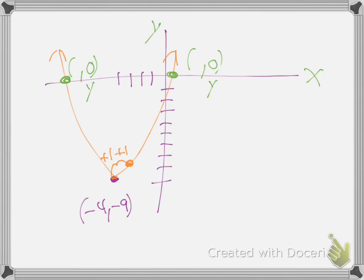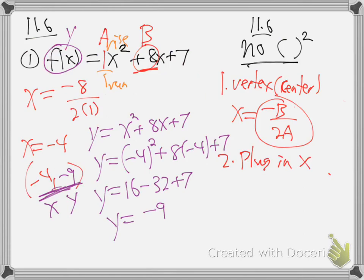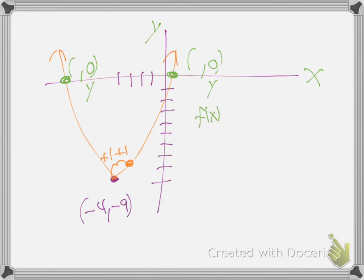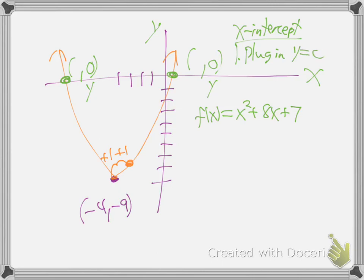So what could I do? I could plug in y equals zero to the equation. Because they have a y value of zero. So if I take the equation f of x equals x squared plus 8x plus 7, and I make y zero. To find x-intercepts, step one: plug in y equals zero. That's how we always find intercepts on any graph - we make the opposite letter zero. So if you want to find x-intercepts, you make y zero.